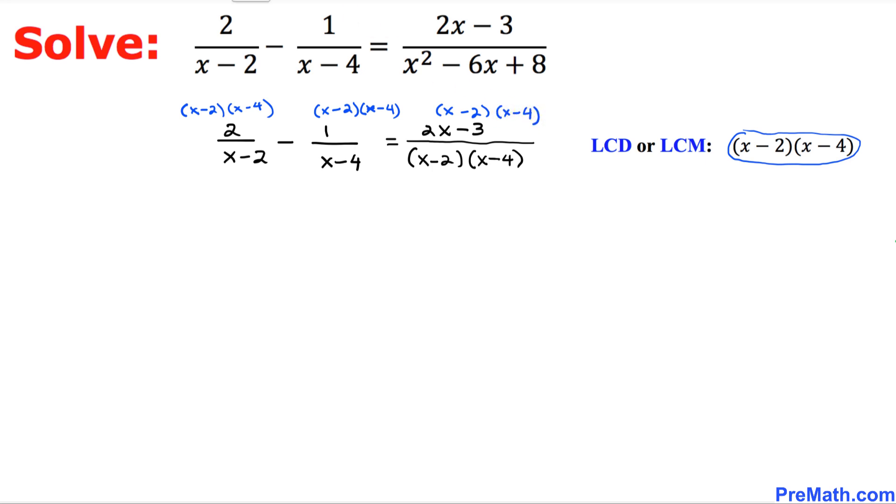Alright, let's now focus on this over here. x minus 2 in the denominator cancels out with this one. So we simply ended up with 2 times x minus 4. Likewise, in the second fraction, x minus 4 is gone with this x minus 4. We are left with negative 1 times x minus 2 equals to, right up here, this x minus 2 is gone with this x minus 2, this x minus 4 cancels out with this x minus 4. So we are just simply left with 2x minus 3.